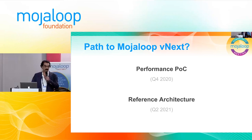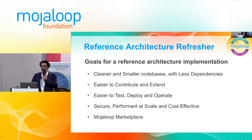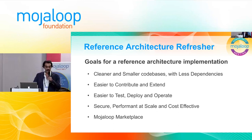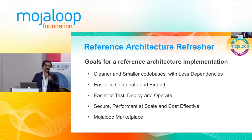After that, we went to do an exercise called the reference architecture — an exercise where we design what good looks like and put it on a wall so that we have it as an inspiration, as a reference. Every time that we change something, we have that tool telling us if we're getting close to that design or not. The objectives for the reference architecture implementation include having cleaner and smaller code bases with less dependencies, easier to contribute and extend, and easier to test. This is the dream set of objectives of any software tool.